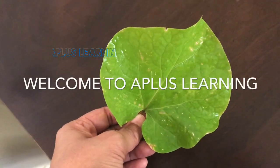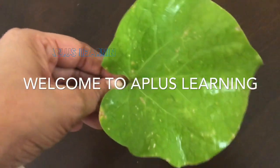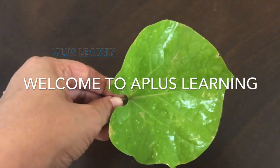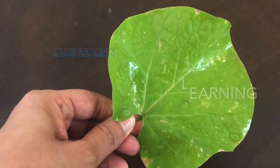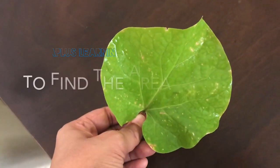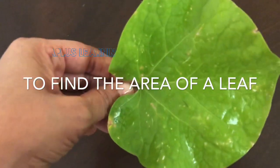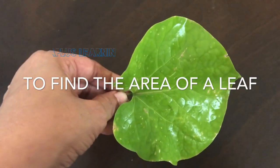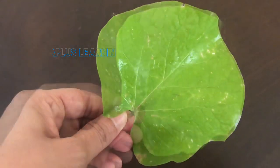Hi, today we will learn how to find the area of a leaf. We know how to find the area of definite shapes like squares and rectangles, isn't it? Now let's learn how to find the area of irregular shapes. Here we will be finding the area of the leaf.